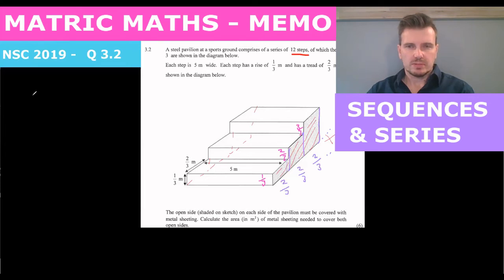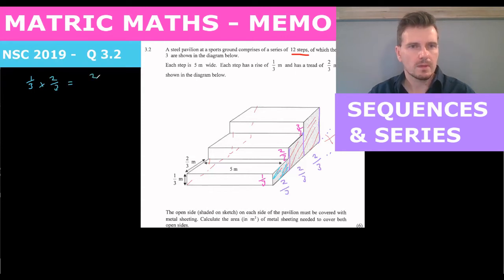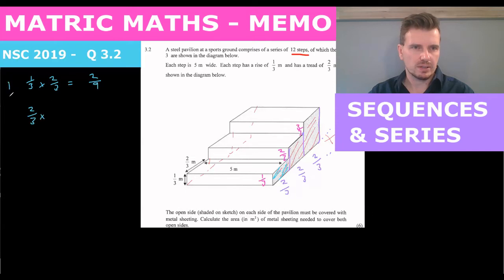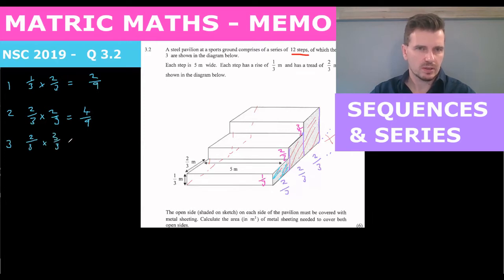So let's look at the first sequence. The first shaded region — I'll do that in blue — is going to be one third times two thirds, which is two over nine. The second one is going to be two thirds times two thirds, which is four ninths. And the next one is going to be two thirds times three thirds, which is six ninths.